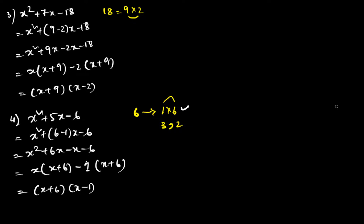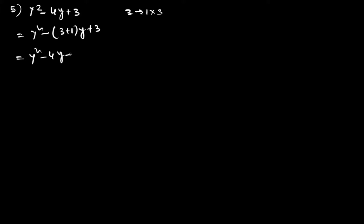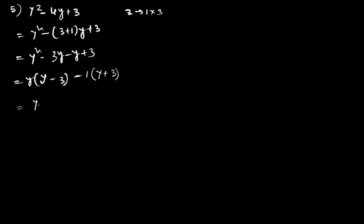The fifth question is y² − 4y + 3. The number 3 can be written as 1 × 3, and the sum of 1 and 3 is 4. So 4 can be written as 3 + 1. We get y² − 3y − y + 3. Taking y common gives y(y − 3), and taking −1 common gives −1(y − 3), so the answer is (y − 3)(y − 1).